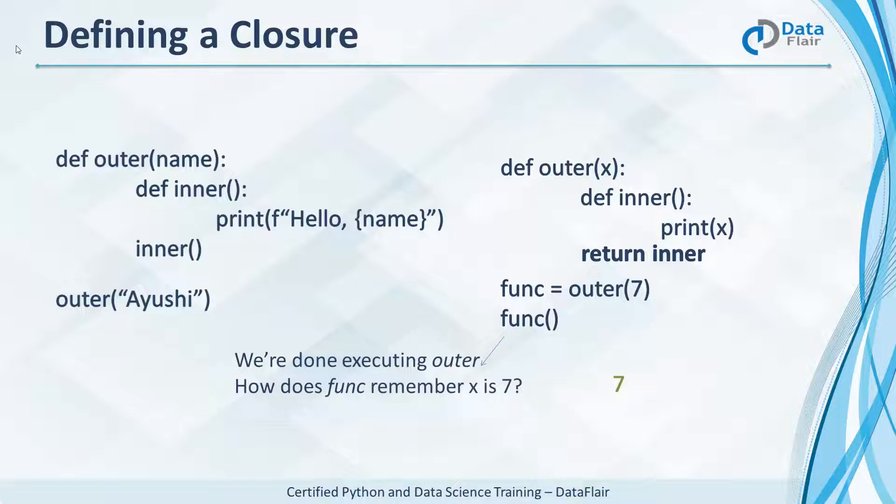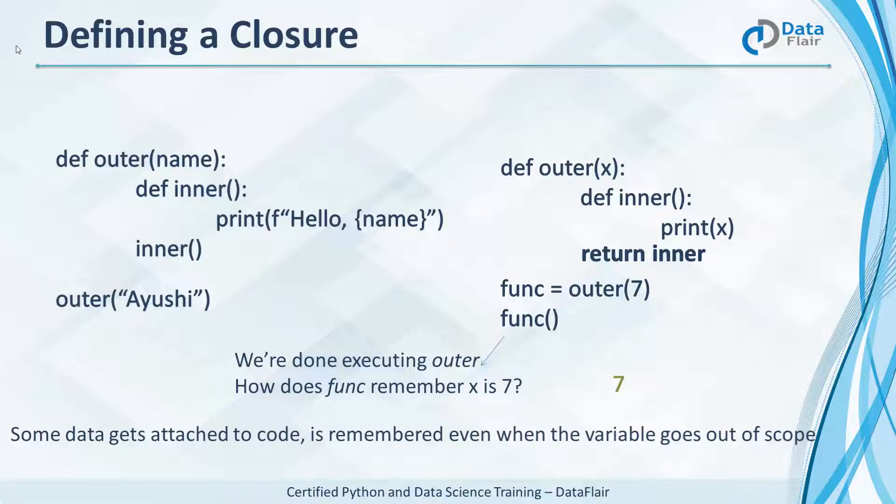This means outer has already executed inner and returned it. So now how does func remember x is 7 for inner? Here's how. With closures, some data gets attached to code. Then it is remembered even when this variable goes out of scope. That's what's happening here.